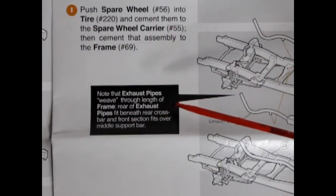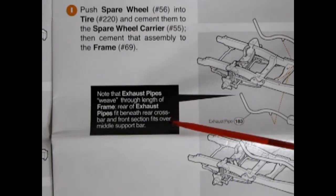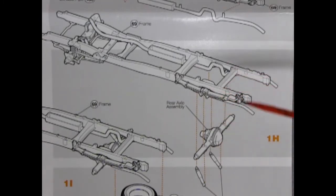Note that exhaust pipes weave through length of frame. Rear of exhaust pipes fit beneath rear cross bar and front section fits over middle support bar. Panel 1H shows our rear axle assembly gluing up onto our springs followed by the rear shock absorbers.